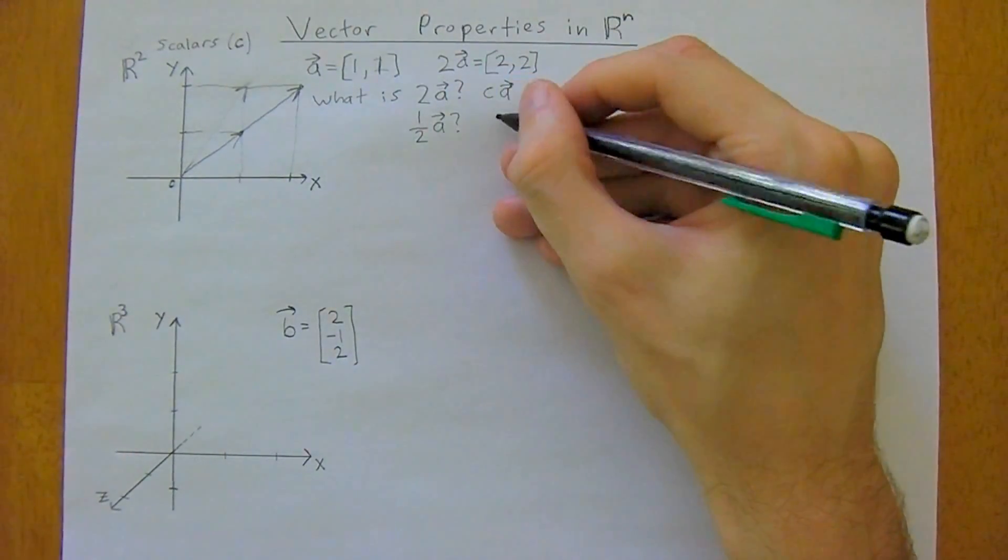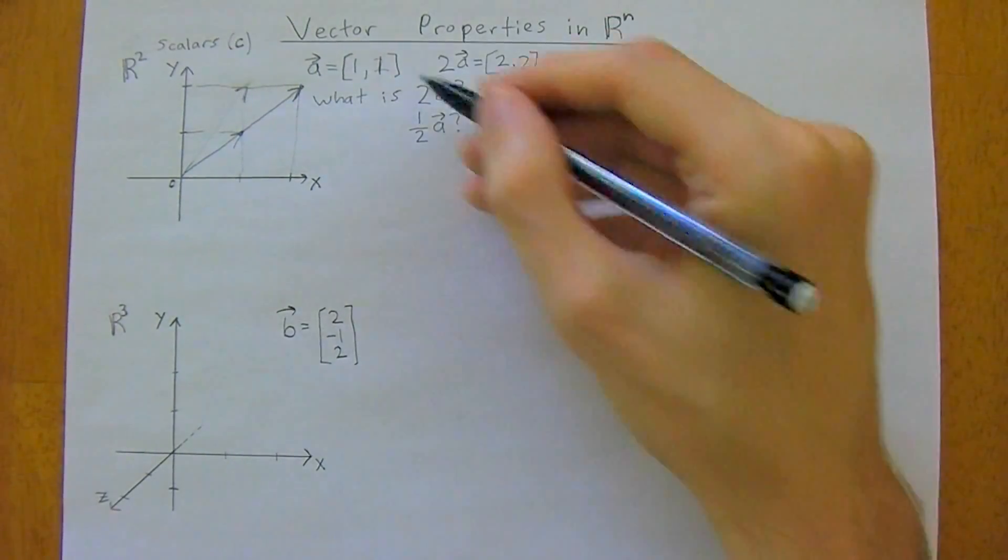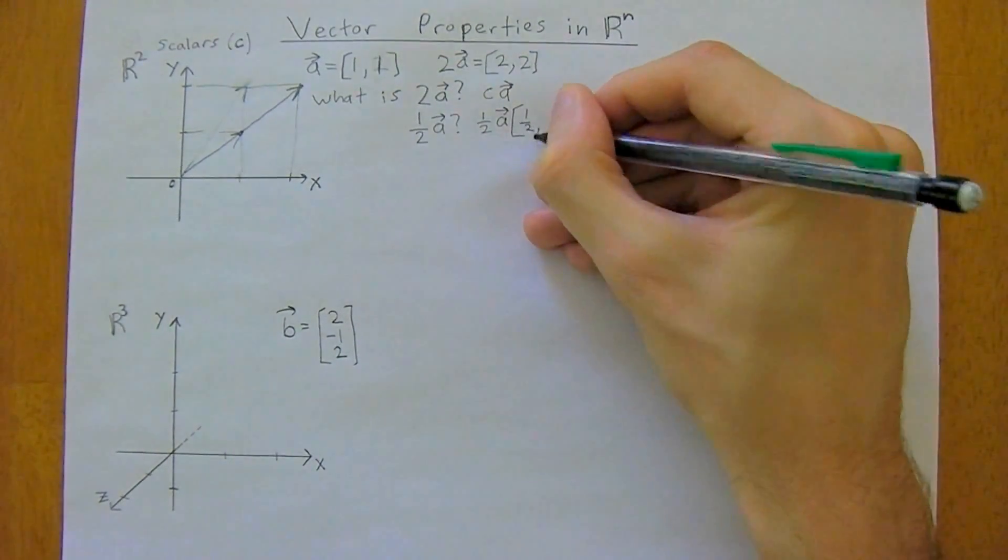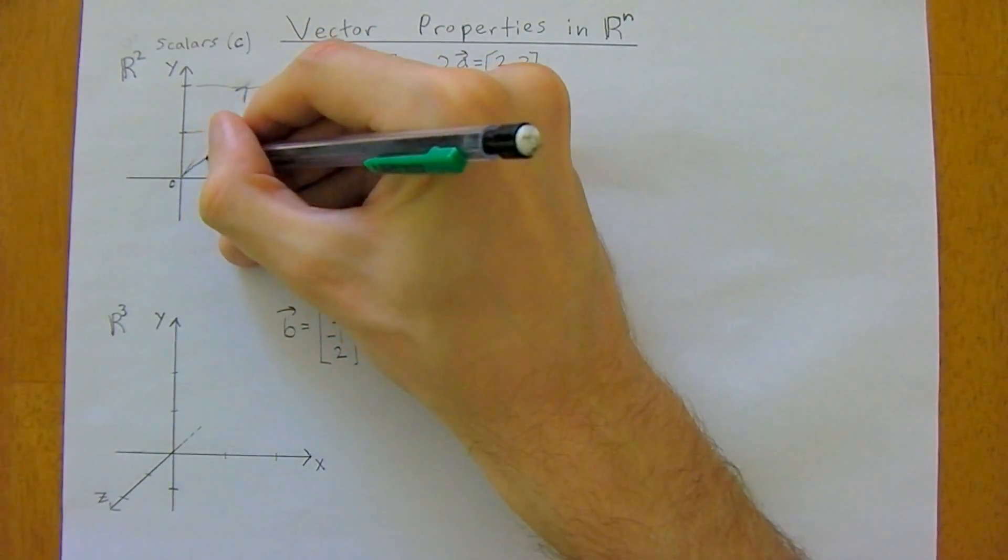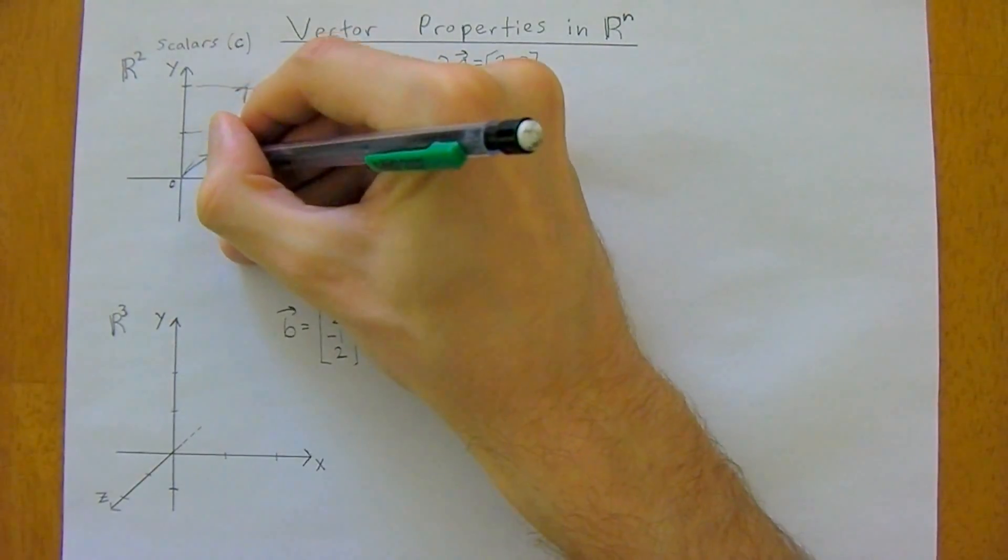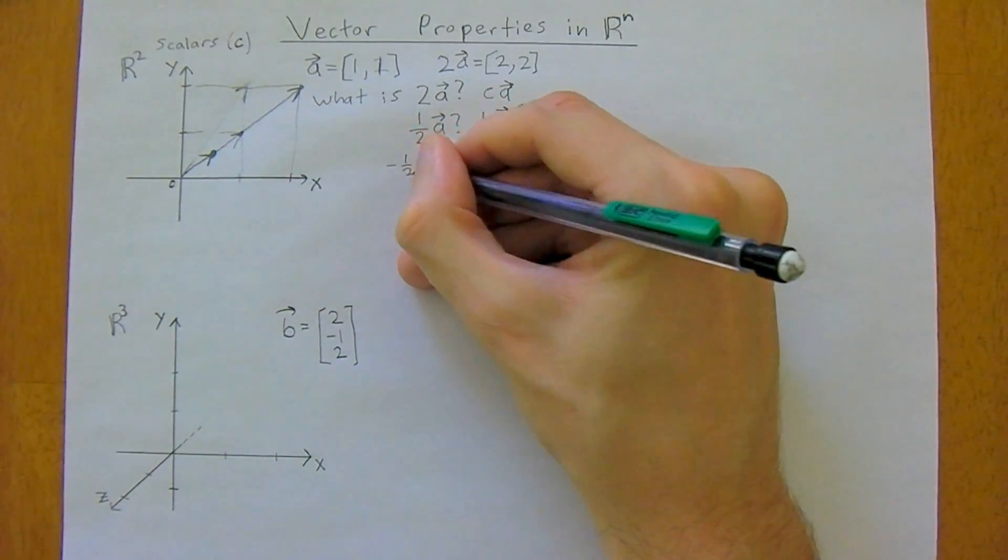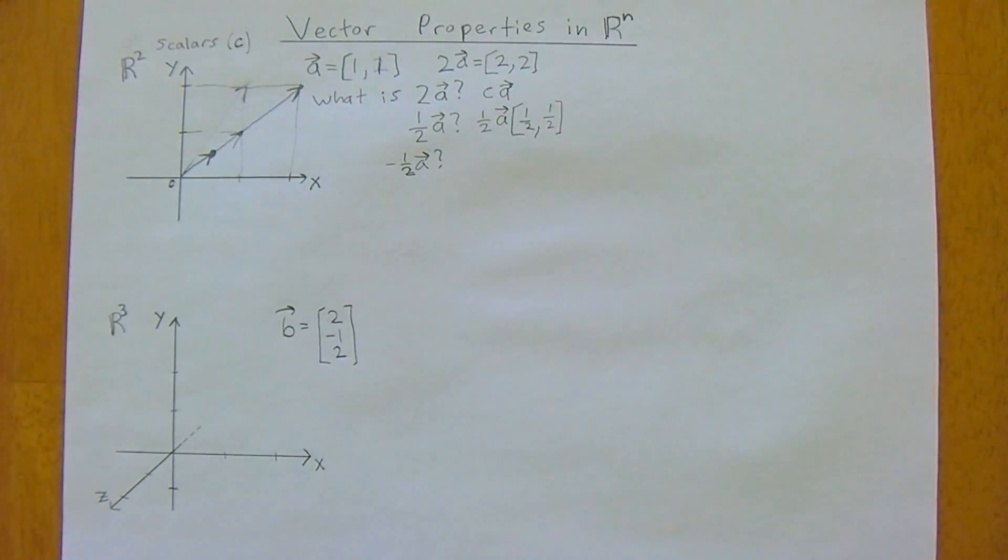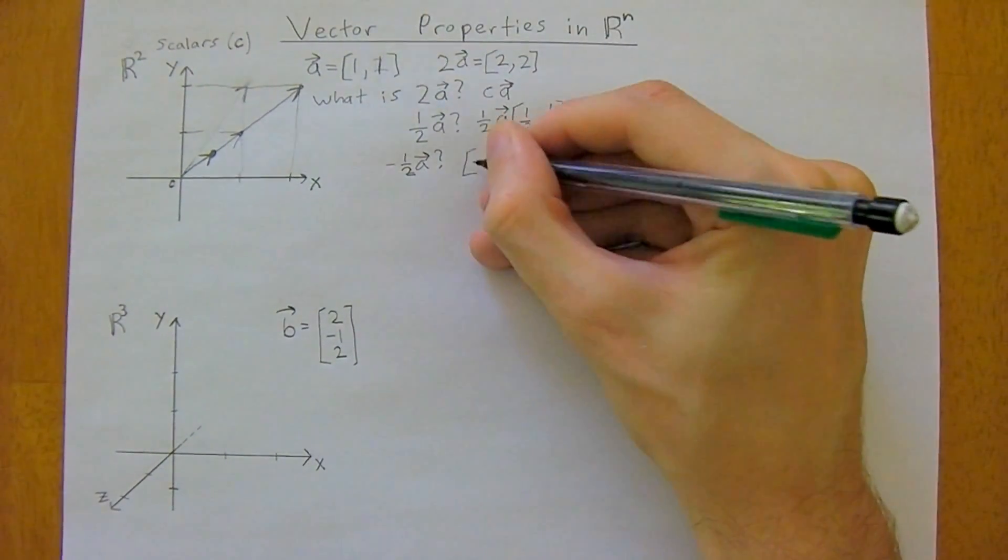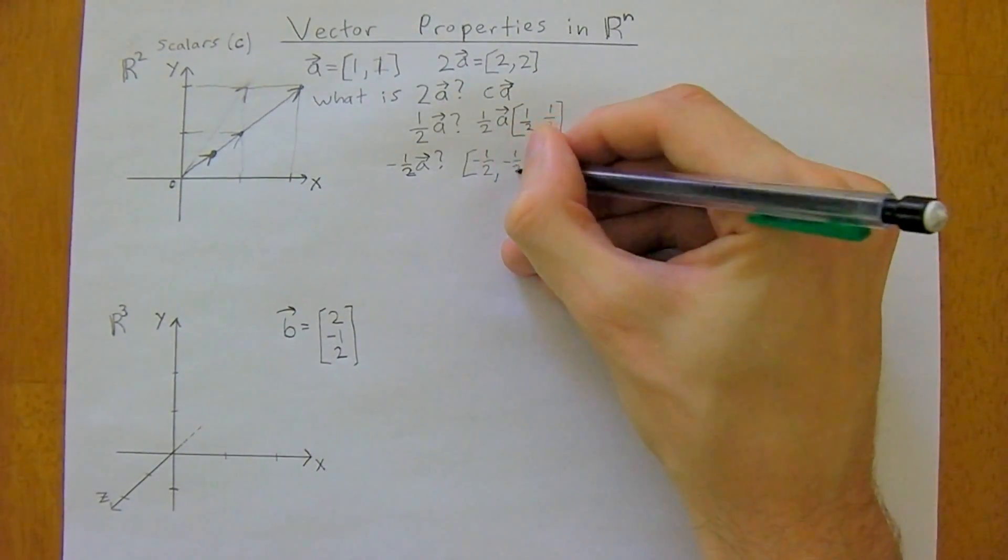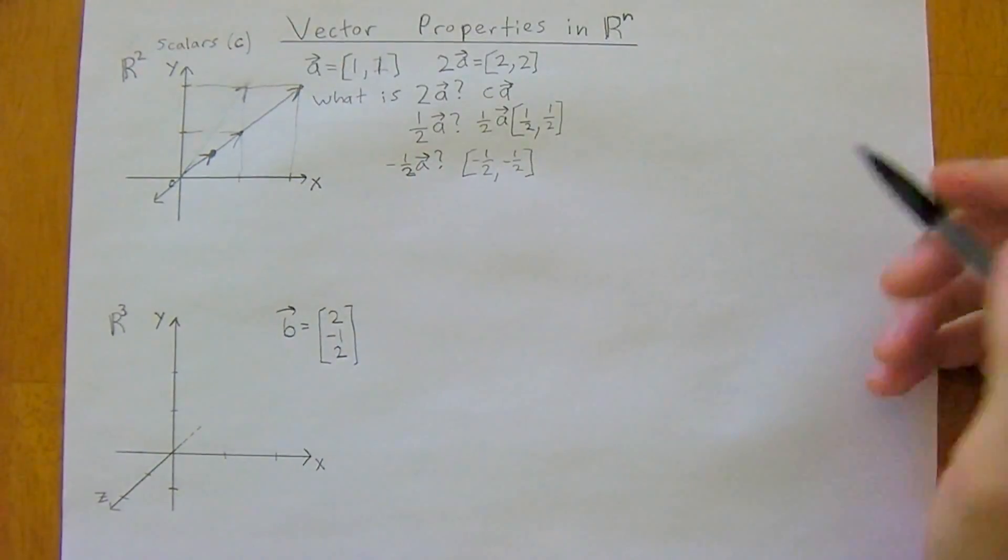And what about 1 half a? Well, again, we're just going to do this exact same thing, so 1 half times 1 is 1 half, and 1 half times 1 again is also 1 half, so that vector would be the same vector, but scaled back to this point. And what if we had negative 1 half a? Well, we would just multiply negative 1 half by 1, negative 1 half, so negative 1 half and negative 1 half, it's pretty straightforward, so that vector would come back something like this.